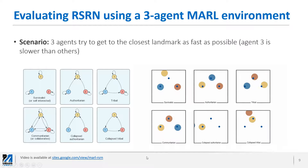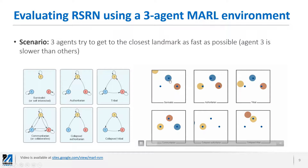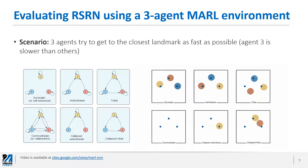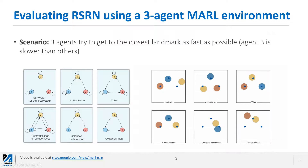Here's a video showing the behavior of the agents after they've been trained. In a self-interested society, agent blue and agent red are normal agents — they get to the landmark as fast as possible — but agent yellow is not able to do that because it's slower. In a communitarian or collaborative society, we see that one of these agents, either blue or red, helps agent yellow — which is slower — and pushes it into the closest landmark. This is an emergent behavior resulting from implementing the communitarian network on top of this system.